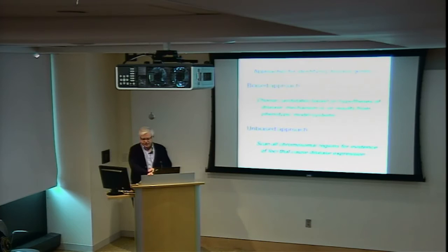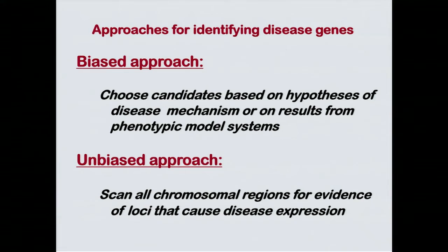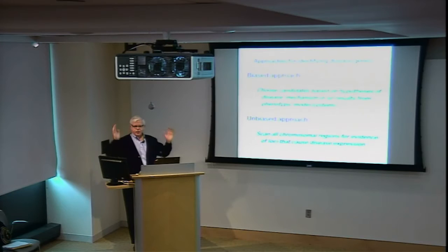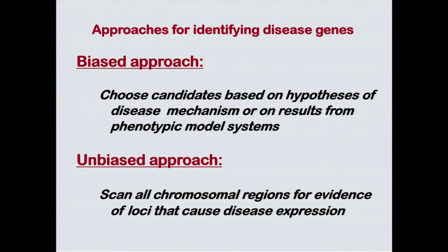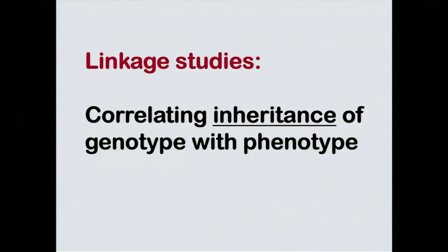There are two ways people have approached finding disease genes. In the early days, people used a biased approach — choosing candidates based on what they knew about the biology of the system — essentially saying, 'I'm smart, I know which of the 20,000 genes is going to be defective.' Most of the time when people did that, they were completely wrong. The other approach, made possible with DNA polymorphisms, was to scan all chromosomal regions in an unbiased way using linkage analysis.